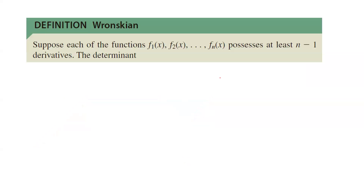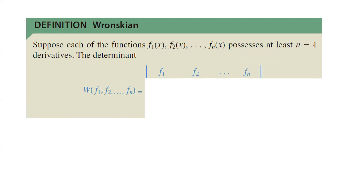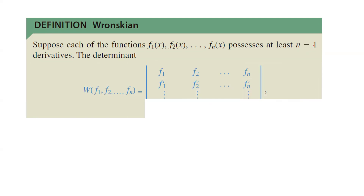Well, you have a shortcut. The shortcut is you form the Wronskian. Suppose each function f1, f2, f3, fn all have at least n minus 1 derivatives. Then the Wronskian is defined as the determinant: list these functions on the first row, take the first derivative on the second row, take the second derivative on the third row, and continue. On the last row, take the (n−1)th derivative of these functions.